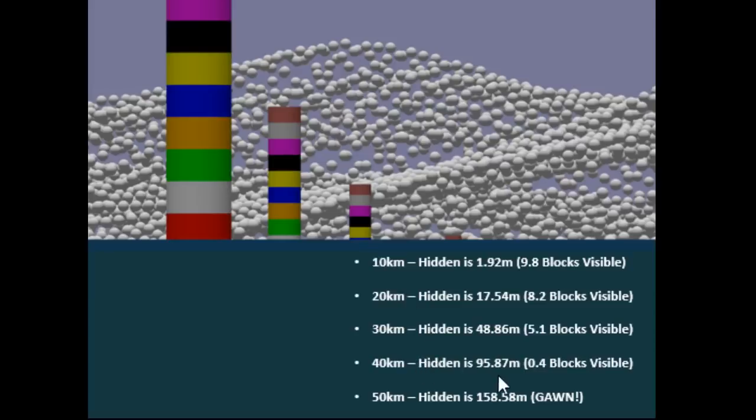And the 40 kilometre block should only have about 0.4 blocks visible. And that one checks out. The 50 kilometre block, as we said, the hidden is far greater than the height of the column. So it is gone.